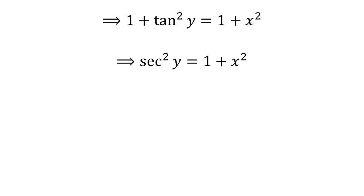By application of the famous trigonometry identity, 1 plus tangent squared of y is equal to secant squared of y. So, secant squared of y is equal to 1 plus x squared.